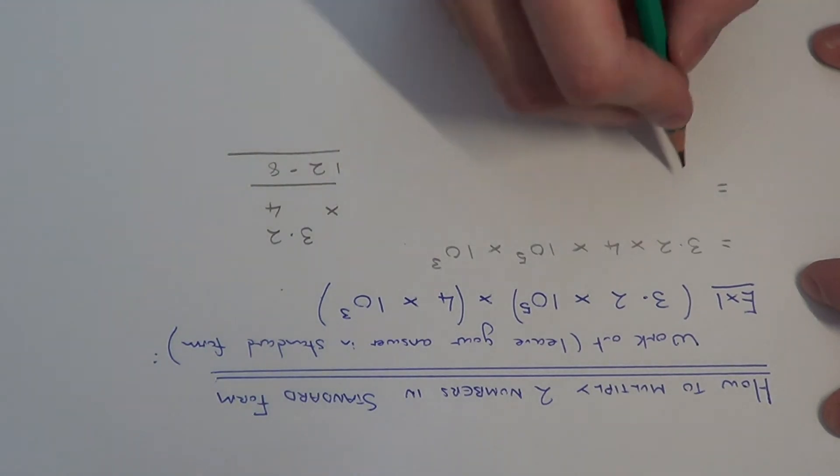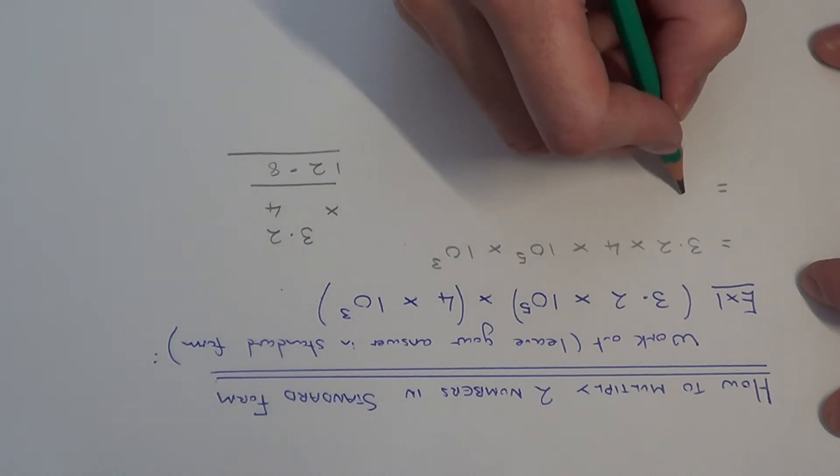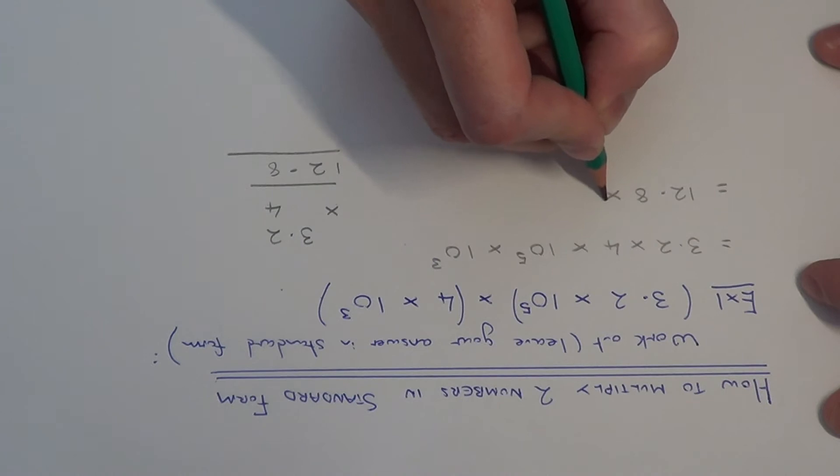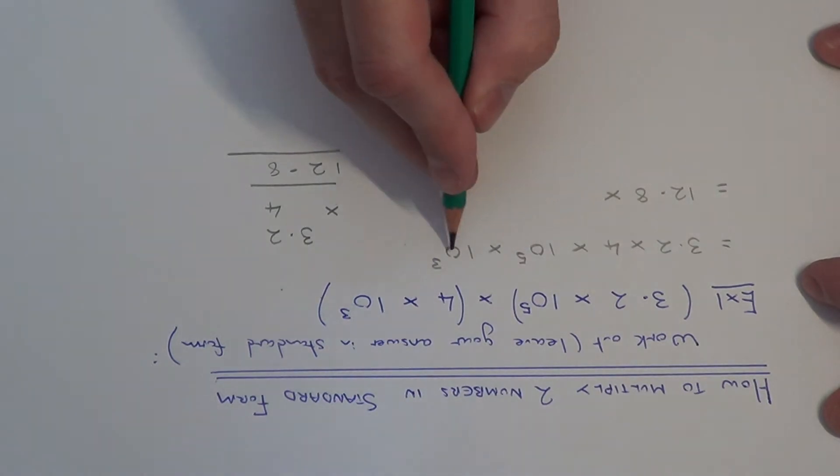So 3.2 times 10 to the 5 times 4 will give us 12.8. And then all we need to do next then is multiply these powers here together.